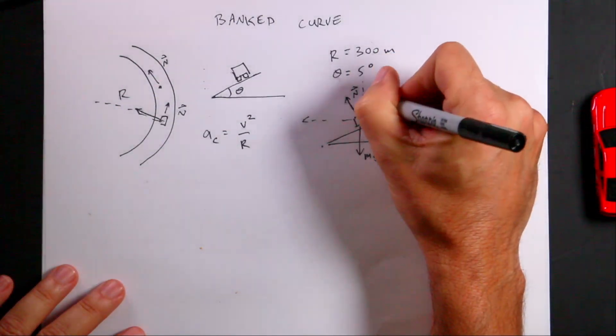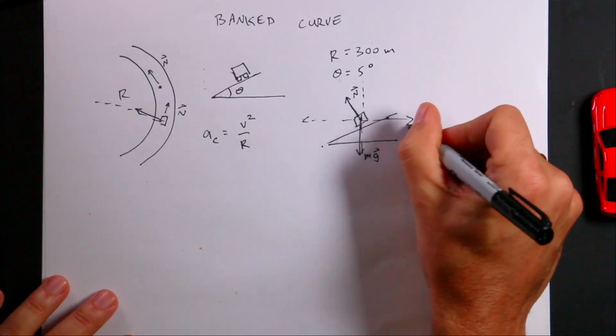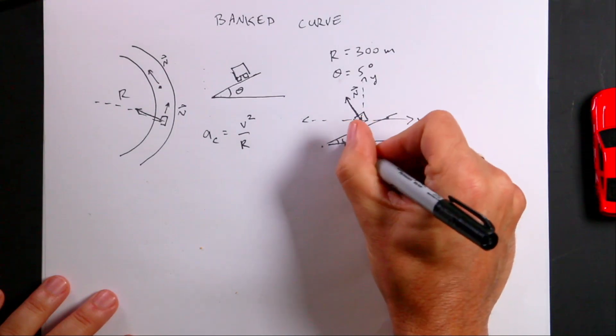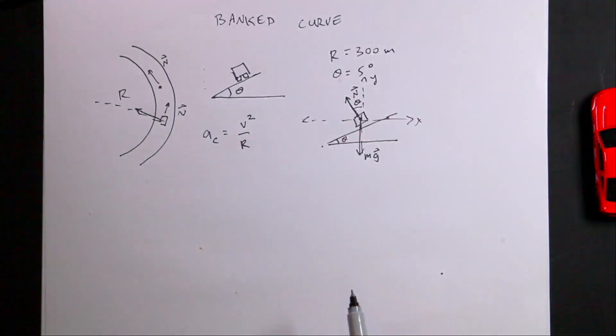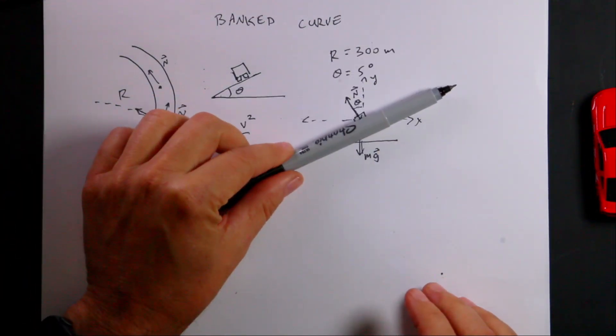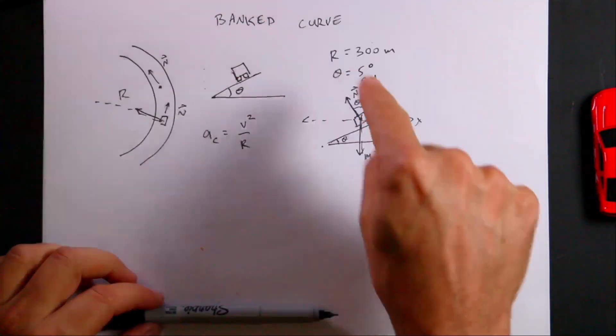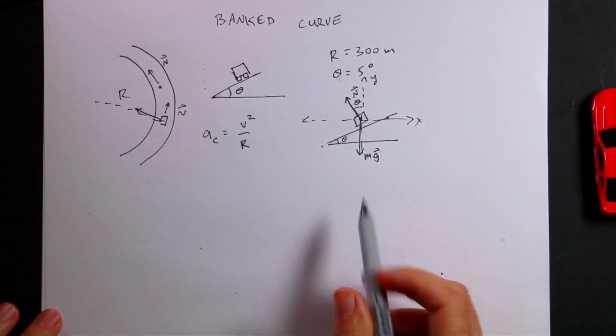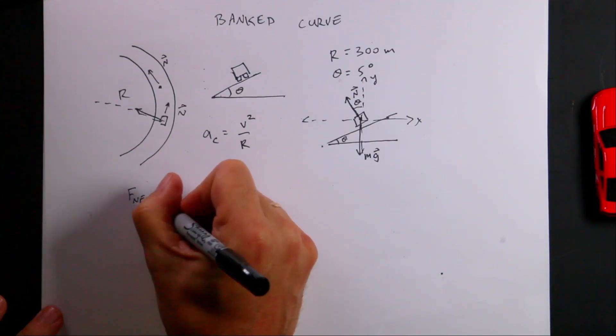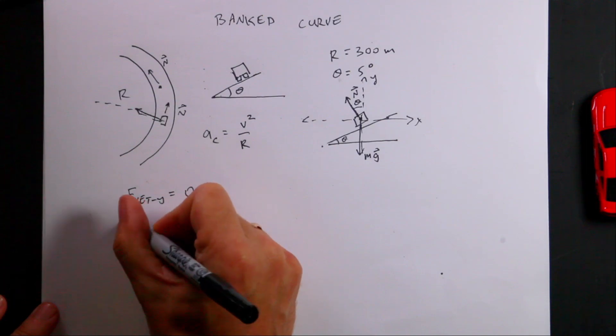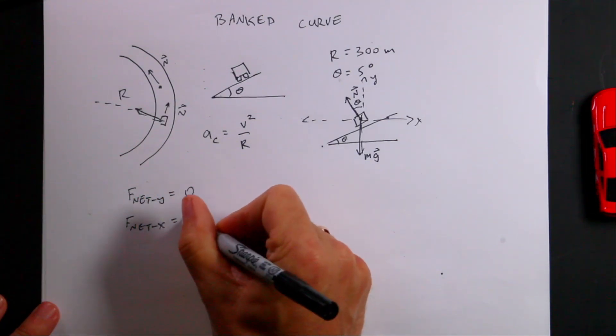Let's get some values here because if I call this the x direction and that the y direction, if that's the angle theta, then this is also the angle theta. Because imagine that as that plane goes down to zero degrees, the normal force would be straight up, so the angle there decreases. Now I can write this: F net equals zero, F net x equals m a_x.